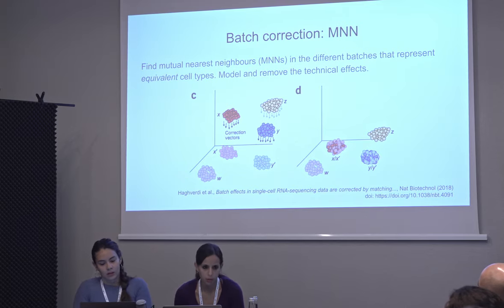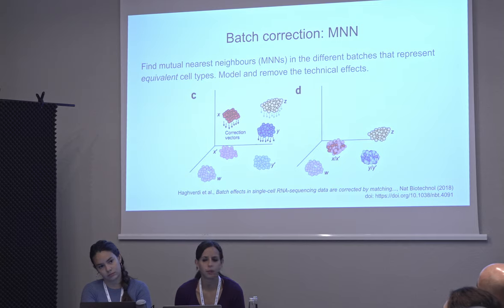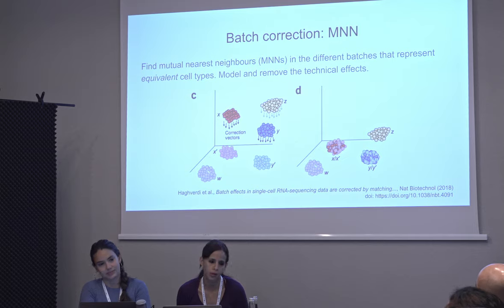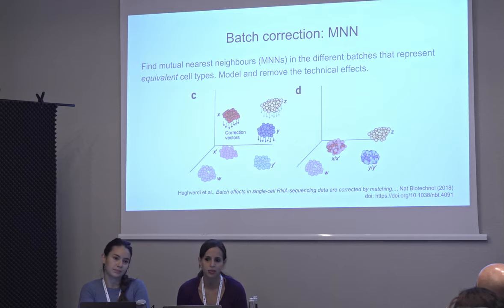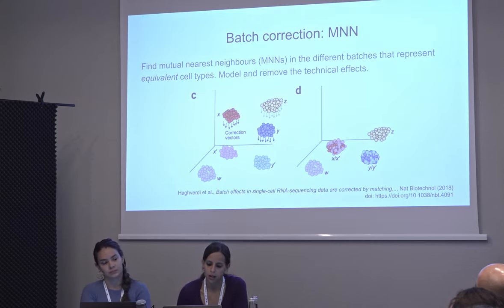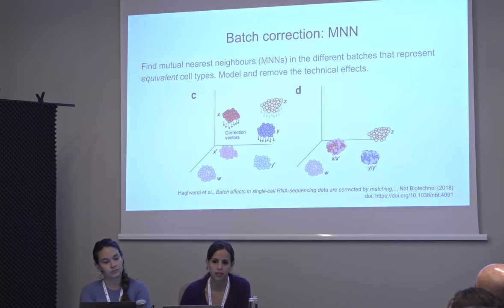The main assumption of this method is that you have a group of cells that are shared — if that's not the case, you cannot apply it, or the results will be wrong. You should always check that you were able to find a decent number of nearest neighbors, because otherwise you won't have a robust estimation of the technical effect. If you try to batch-correct two datasets that are completely different, you will just get nonsense.